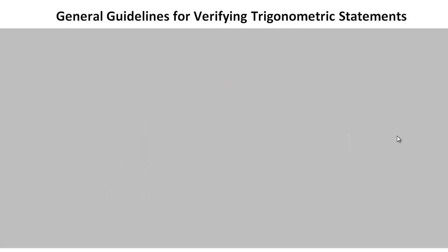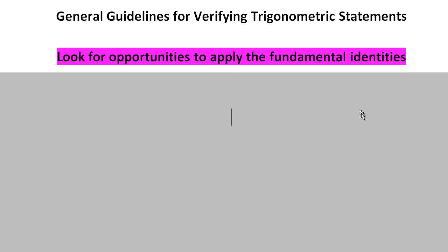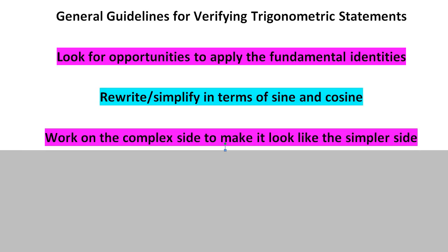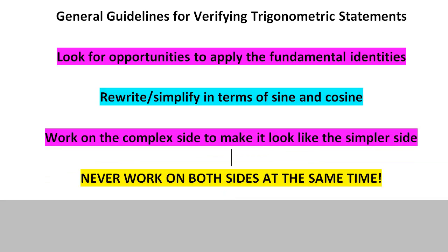There are, however, some general guidelines. Look for opportunities to apply the fundamental identities — and you pretty much have to memorize them. Rewriting one side in terms of sine and cosine often simplifies expressions with many co-functions. Work on the complicated side to make it look like the simpler side. Most importantly, never work on both sides at the same time — this is not an equation until you've proven it is, so you cannot balance it like an algebra equation. Work on one side, usually the complicated side, and leave the simpler side alone.